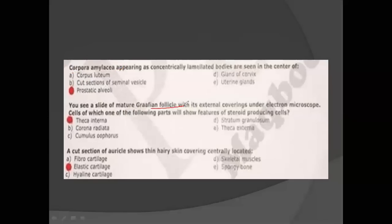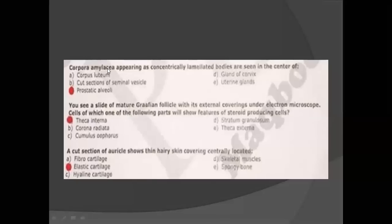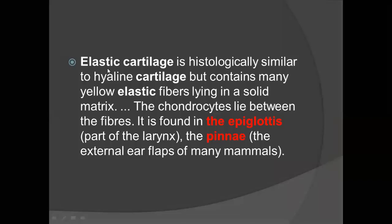Looking at the slide of the Graafian follicle: steroid-producing cells mean estrogen and progesterone, so theca interna cells are responsible for this. Regarding the cut section of the auricle — you need to know that when you have a cut section of the pinna, the cartilage will be elastic. Elastic cartilage is not found in many parts of the body, so you need to know which parts have elastic cartilage — mainly the epiglottis and pinna.